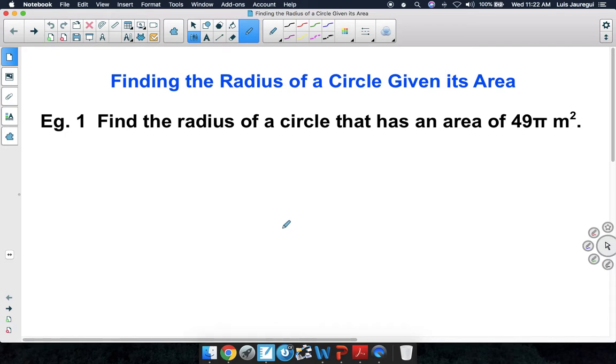Example 1. Find the radius of a circle that has an area of 49 pi square meters. Notice that we're looking for the radius and we're being given the area.